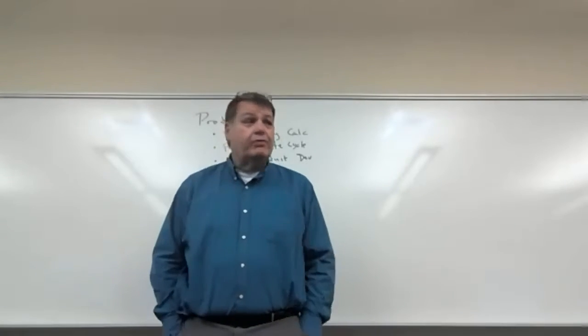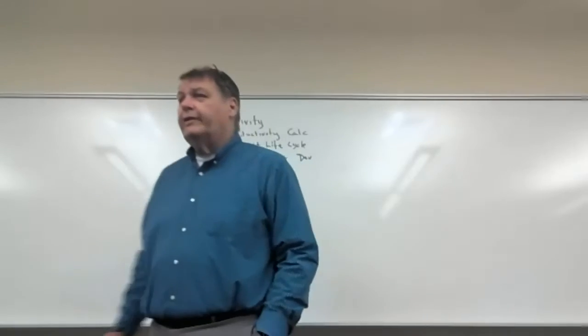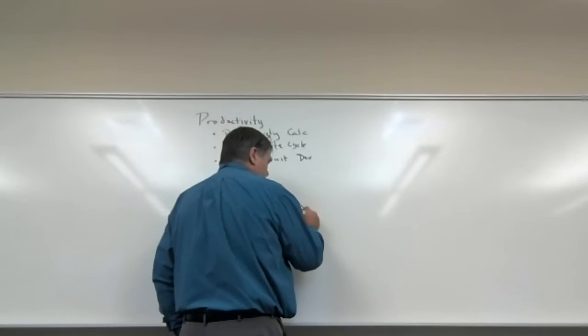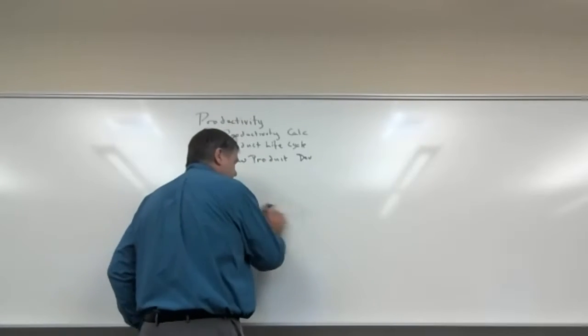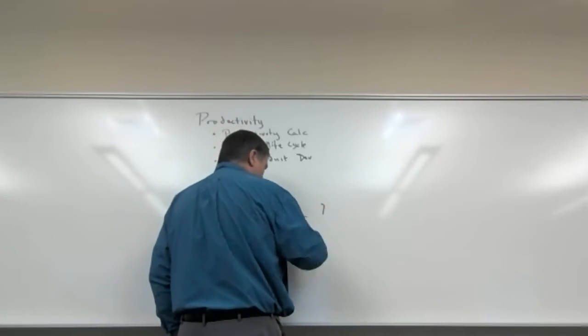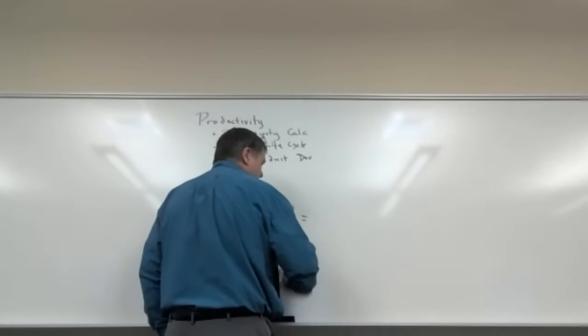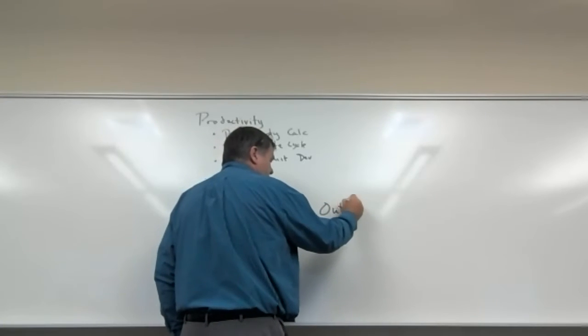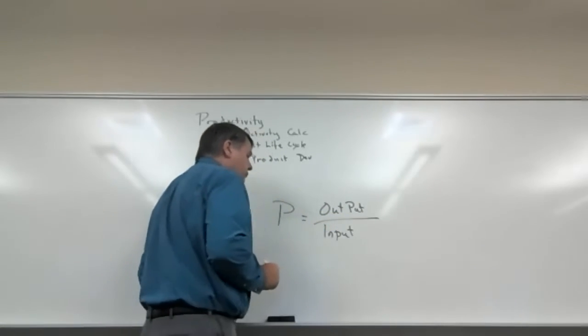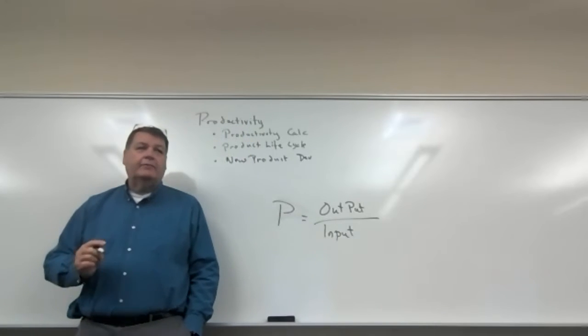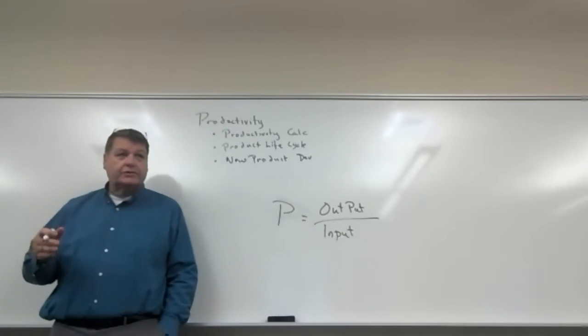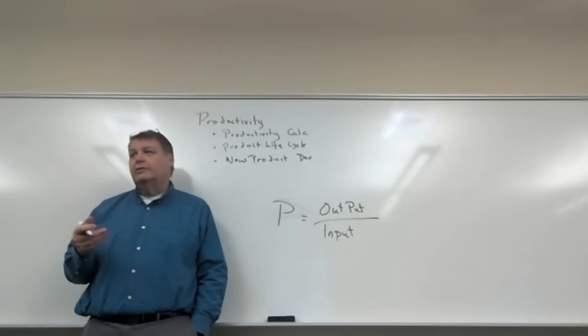Let's talk about the next big section in the book, which is measuring productivity. And that immediately goes into product lifecycle, which immediately goes into new product development. So for the next series of lectures we're going to be focused on those topics. Productivity is actually pretty simple. We've already introduced the equation. Productivity is equal to output divided by the input. Efficiency is what we're talking about.